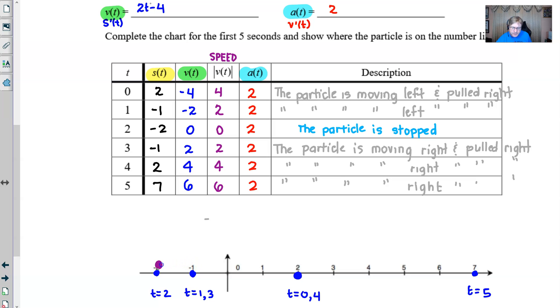And then when I reach that position, the particle is stopped. And then the particle starts to move right. And because the particle is pulled to the right, as it continues to move, it will accelerate. Hence, why you can see these velocities are increasing all the way to time 5.